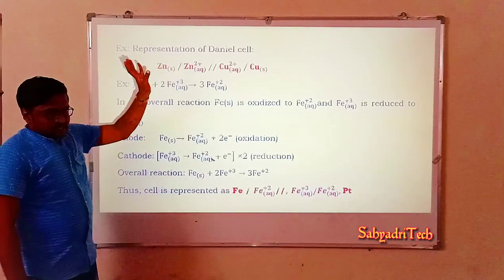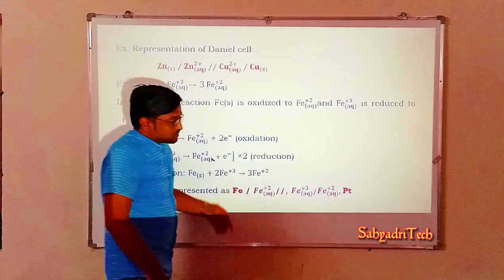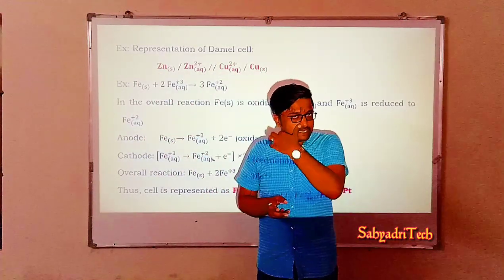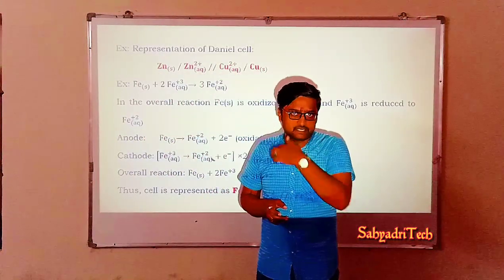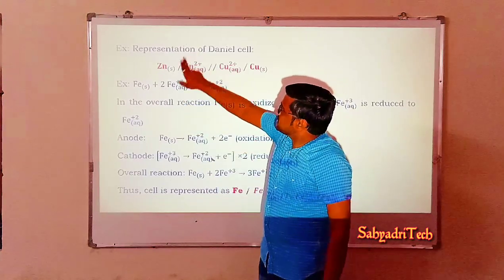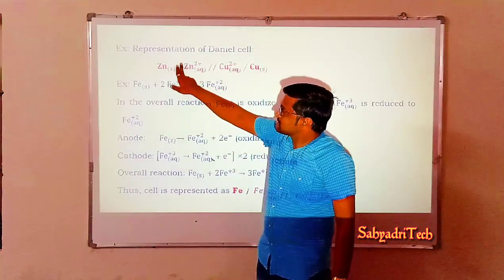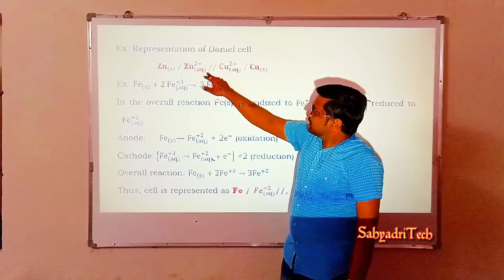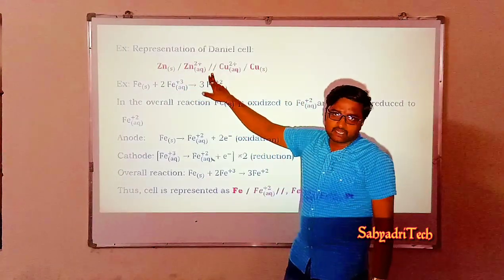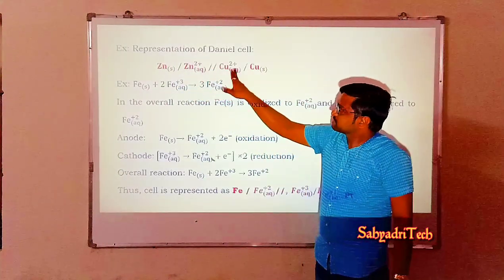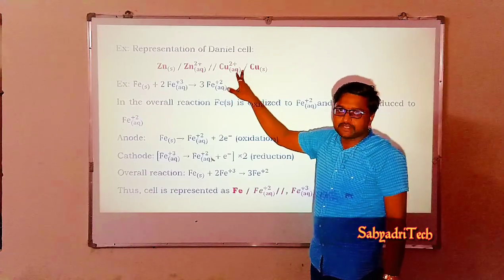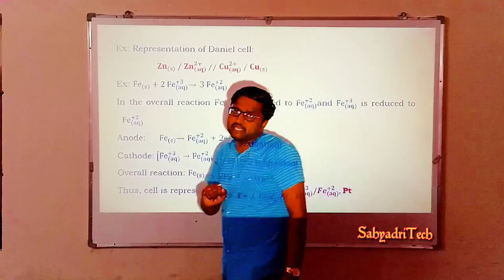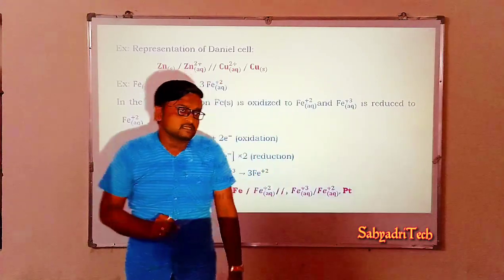For example, the Daniel cell — which has a zinc electrode and a copper electrode — is represented as: Zn(s) | Zn²⁺(aq) || Cu²⁺(aq) | Cu(s). The left side (Zn | Zn²⁺) is the oxidation half cell, the double line indicates the salt bridge, and the right side (Cu²⁺ | Cu) is the reduction half cell.